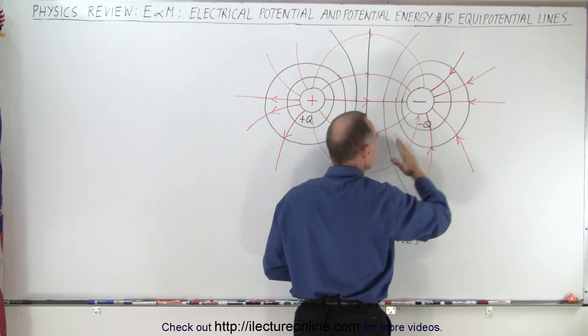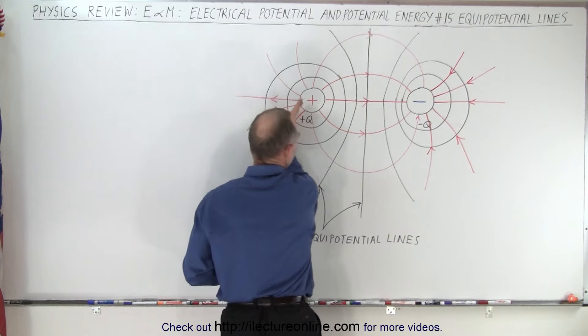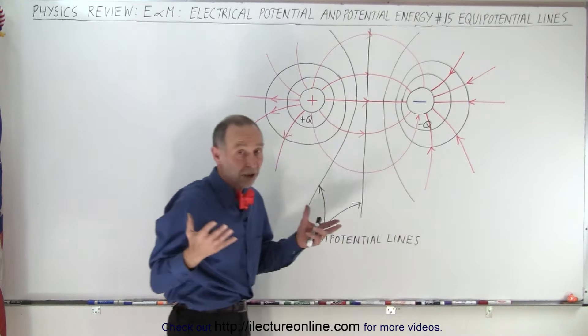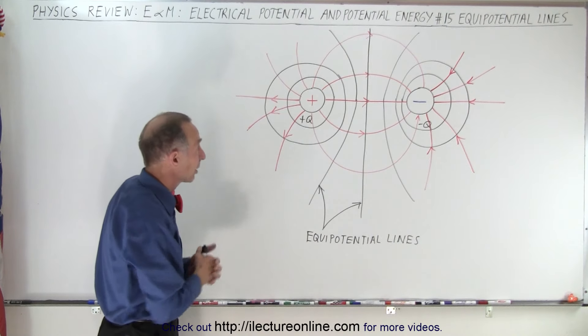So on this side you'll have negative potential, on this side you have positive potential, and right halfway in between the potential should be zero, and that's how you can best illustrate what equipotential lines are.